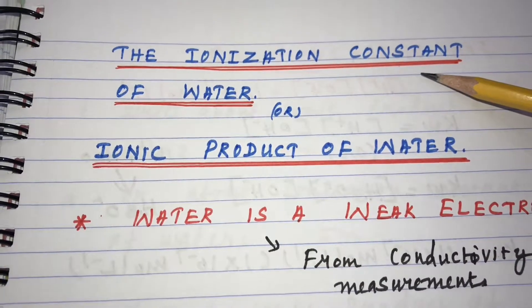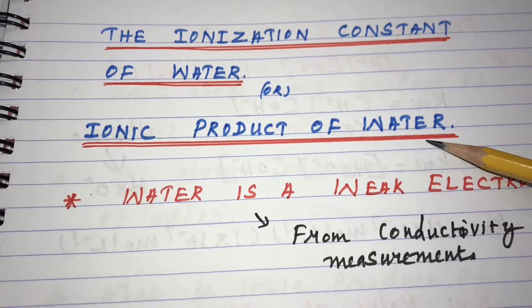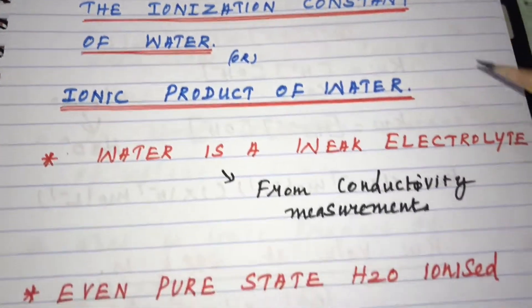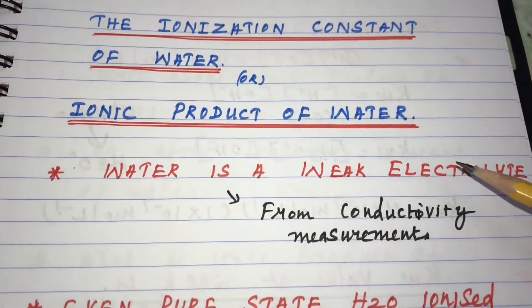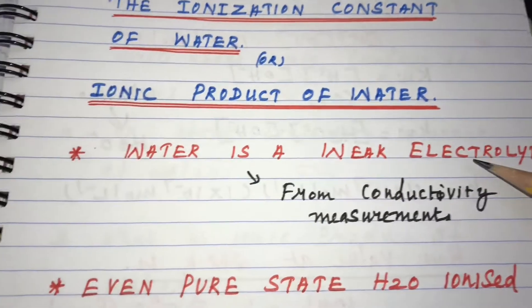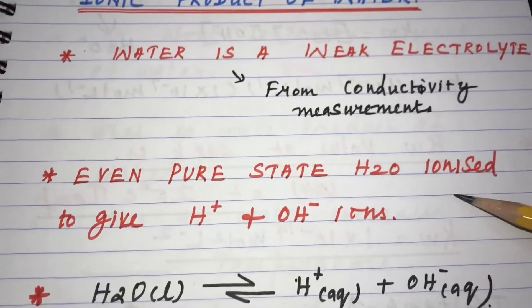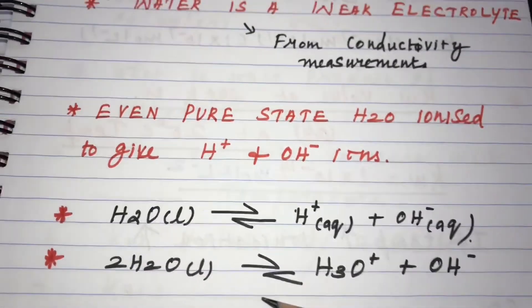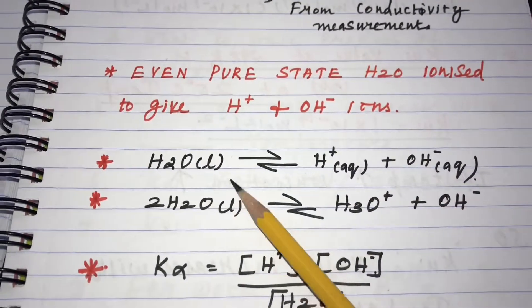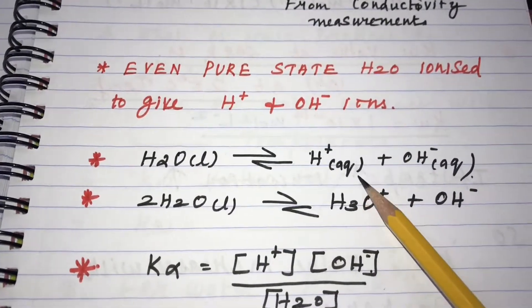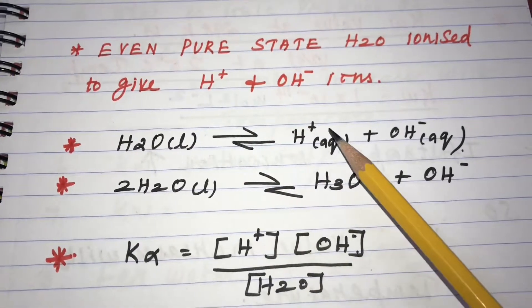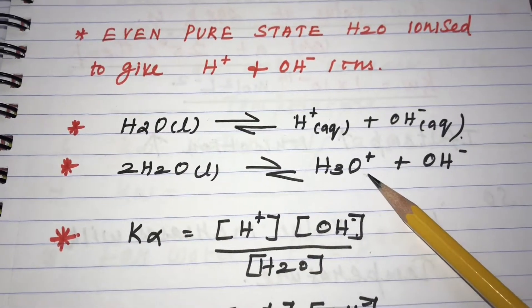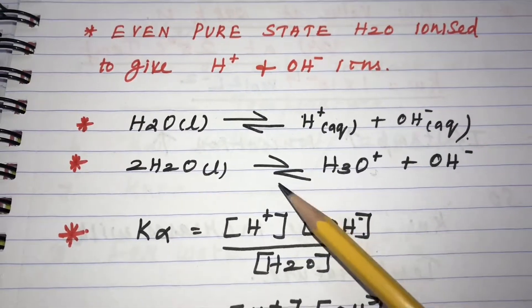The ionization constant of water, or ionic product of water. From conductivity measurements, it has been found that water is a weak electrolyte, even in its pure state. Water (H₂O) ionizes to give H⁺ ion and OH⁻ ion in solution. The H⁺ ion in solution always combines with H₂O and is present as H₃O⁺, called the hydronium ion.